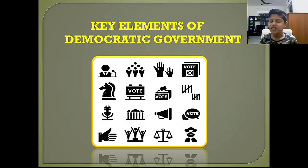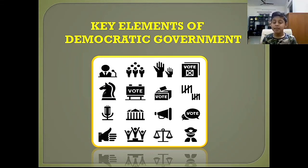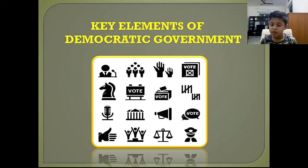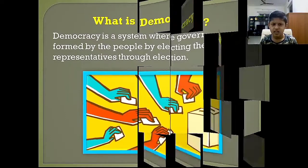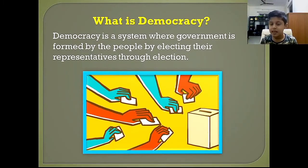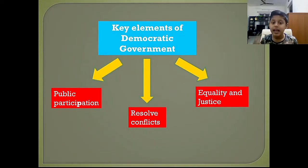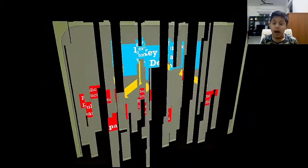Welcome back to another video. Today we'll see the key elements of a democratic government. People struggled for their rights for a long time, and democracy is generally considered the best system to give rights to the people. Democracy is a system where government is formed by the people by electing representatives through elections. The key elements of democratic government are public participation, resolving conflicts, equality, and justice.